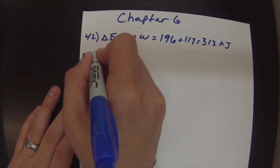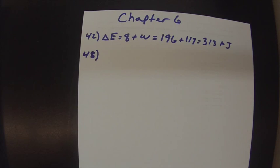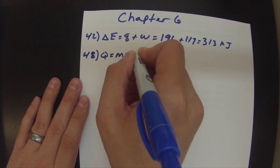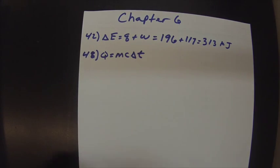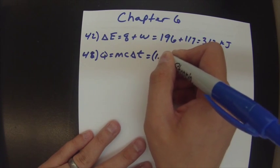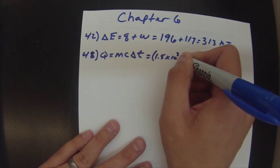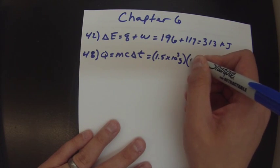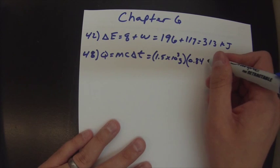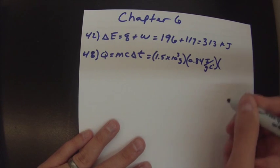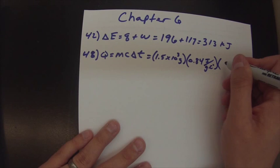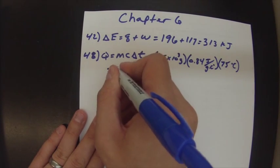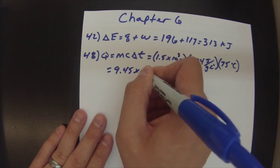The next we're gonna do is number 48. Number 48 says how much heat is required to warm 1.5 kilograms of sand from 25 degrees Celsius to 100 degrees Celsius. So we're gonna use MCAT, Q equals MC delta T and that's a delta not an A even though I call it MCAT. So our mass in this case we need to be in grams, so 1.5 times 10 to the third grams. The specific heat you can get from a table, there's a table in your book that has that. It's 0.84 joules per gram Celsius degree. And then our change in temperature is from 25 to 100, and that's 75 Celsius degrees of change. So just multiply those together: 9.45 times 10 to the fourth joules.